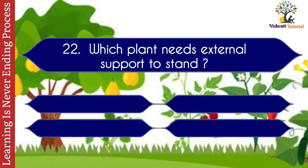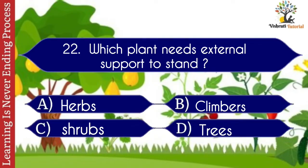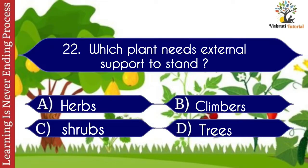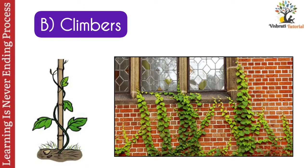Question number twenty-two: which plant needs external support to stand? Options: A. Herbs, B. Climbers, C. Shrubs, D. Trees. The correct answer is B. Climbers. Climbers are plants that need external support to stand.